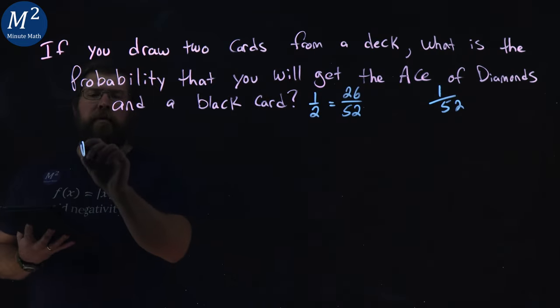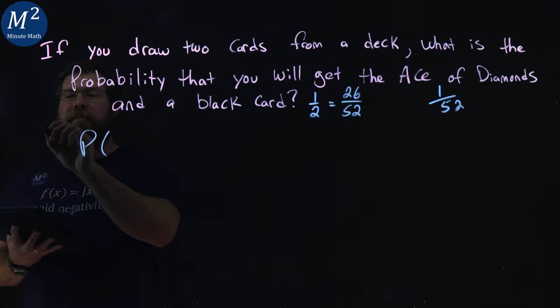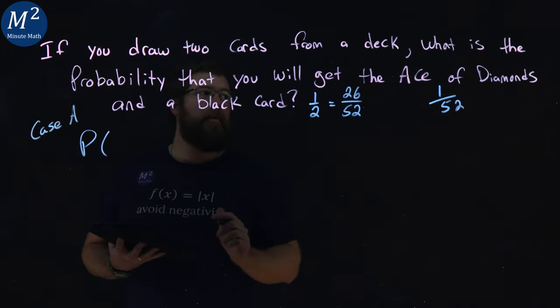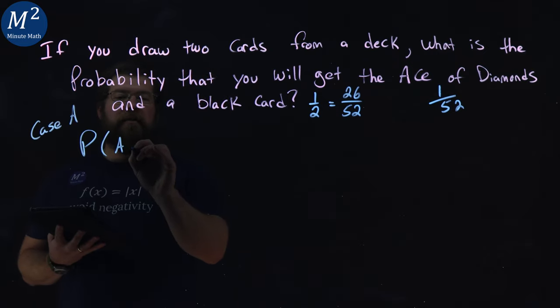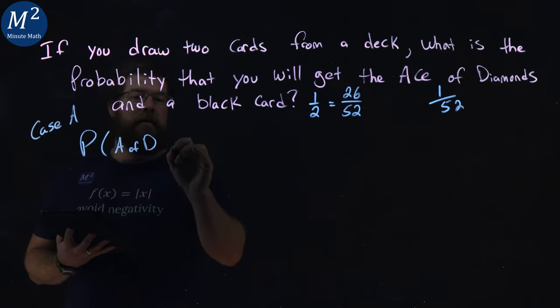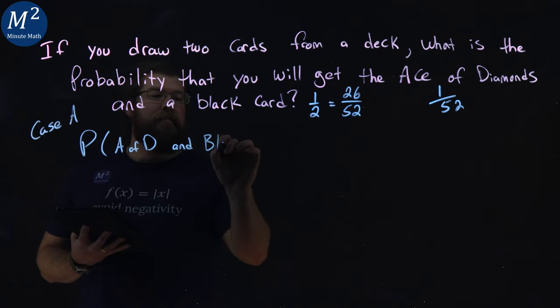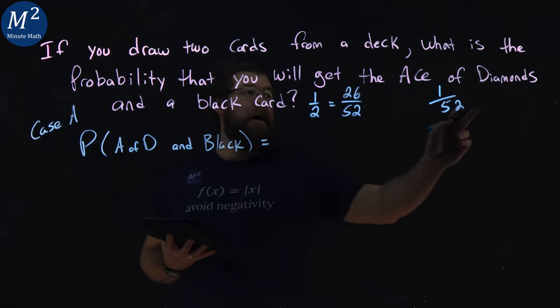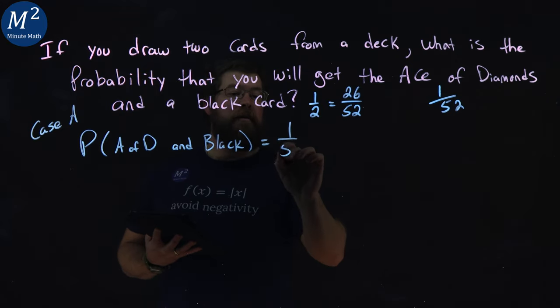Our first one. Our probability, this is our case A, our first case here. Our probability, we have the ace of diamonds and black. So, that's our order. Ace of diamonds first has a probability of 1 out of 52.